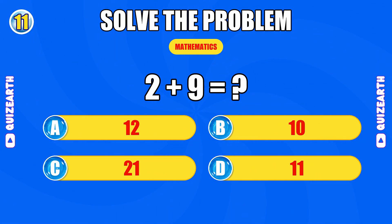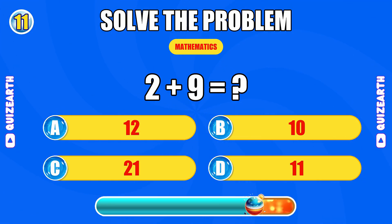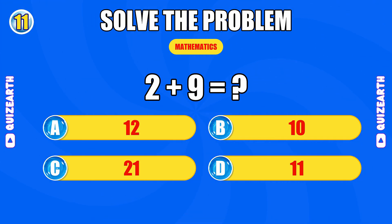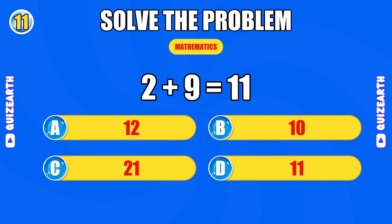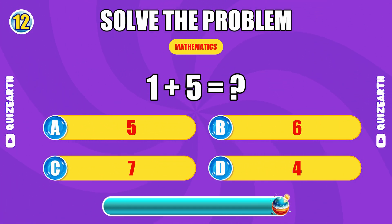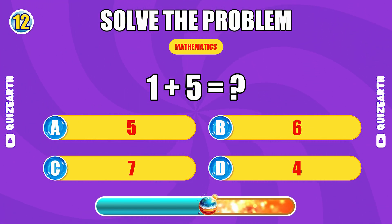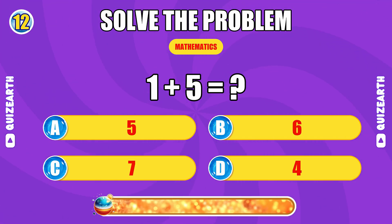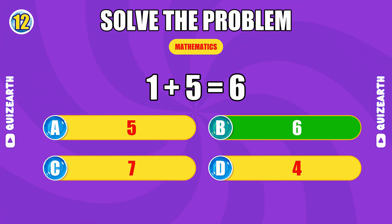How much is two plus nine? You're flying — the answer is 11. What do you get when you add one and five? You're flying — the answer is six.